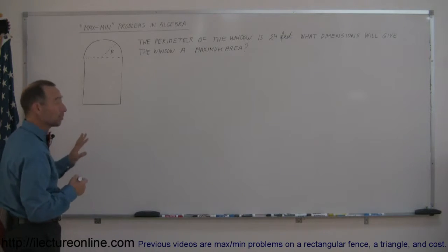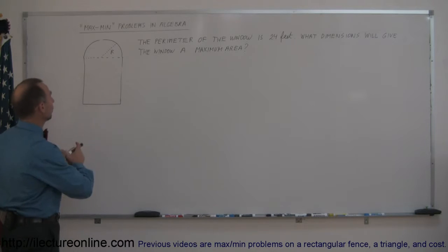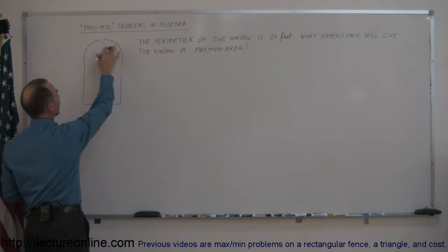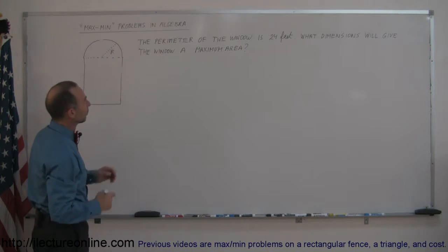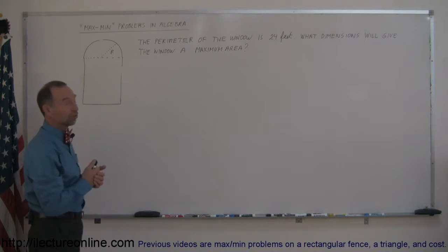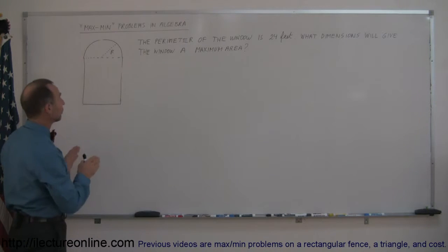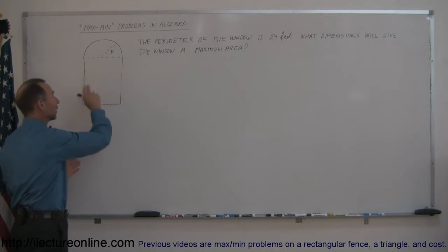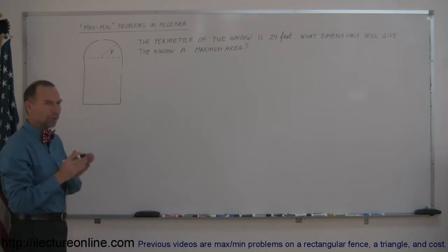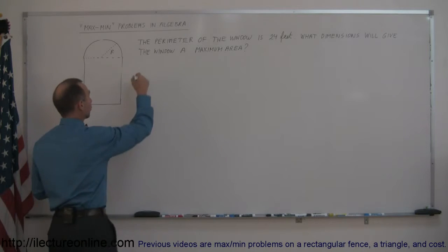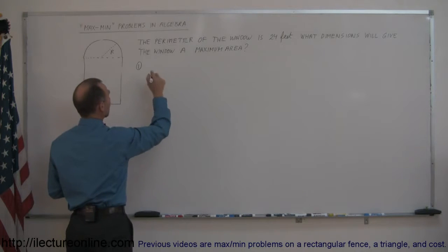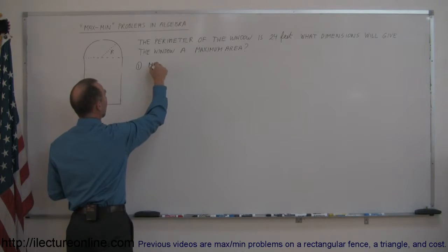This is a little bit more difficult of an example. We have a window that has a rectangular base and a semicircular top, and the perimeter of this window is supposed to be 24 feet. The question is: what dimensions will give you the maximum size window — in other words, the maximum area of the window? The way you normally do max min problems is you start out by first determining what's being maximized. In this case, the area is supposed to be maximized, so we write that down: maximum area.